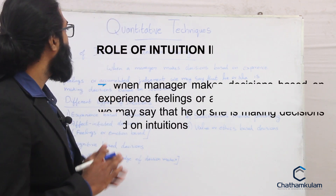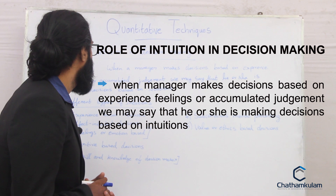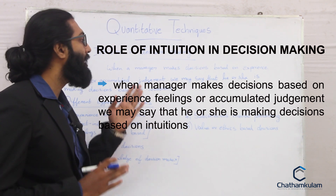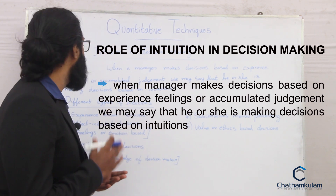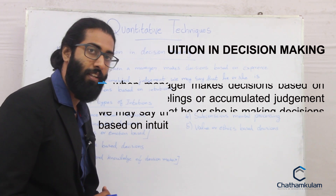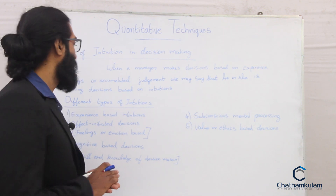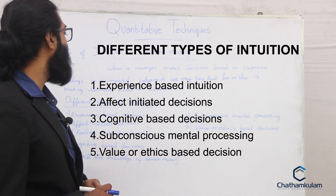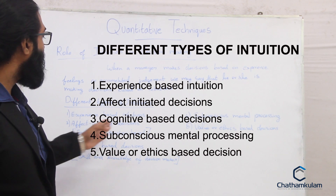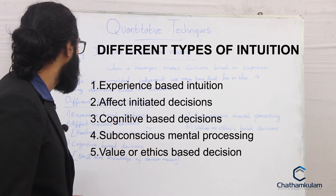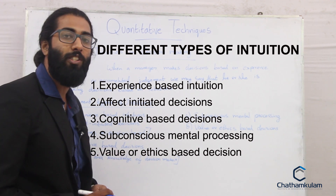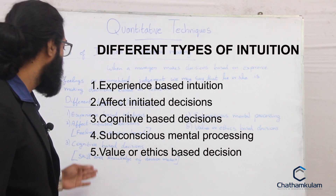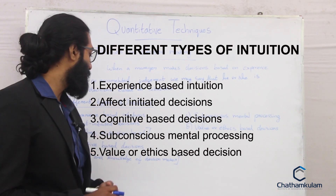Next we will see the role of intuition in decision making. When a manager makes a decision based on experience, feelings, or accumulated judgements, we say that he or she is making a decision based on intuition. There are different types of intuitions. First is experience-based intuition, and the second is affect-initiated decisions — intuition that is based on feelings or emotion. The third is cognitive-based decisions, which are based on skills and knowledge of a decision maker.